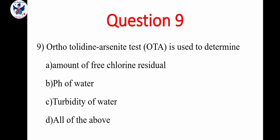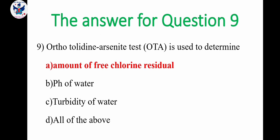Next, question 9. Orthotolidine arsenite test is used to determine option A, amount of free chlorine residual, option B, pH of water, option C, turbidity of water, D, all the above. So here the first option is correct because pH of water, we won't test with this, turbidity of water also, we won't test. So the correct answer is option A, amount of free chlorine residual is determined by orthotolidine arsenite test.